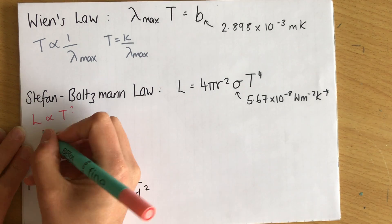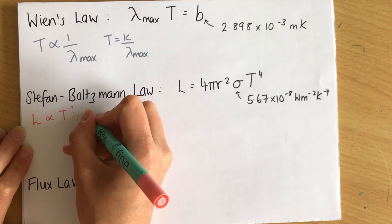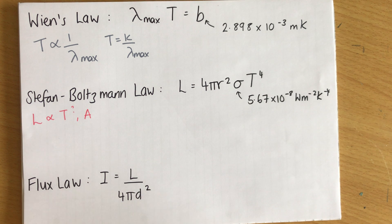and it's proportional to the surface area of the star. The bigger the star's surface area, the more energy it can emit per second. And therefore, the more luminosity it has, the higher power it has.